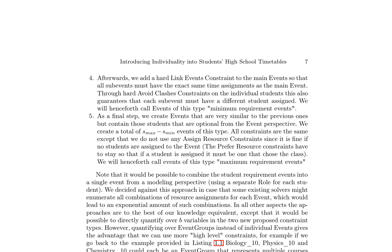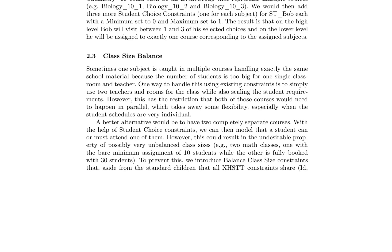The introduction of individuality into students' high school timetables is achieved through a multi-step process. Initially, an event is created for each class with each student assigned as a resource. Student requirement events are generated for each student representing their chosen subjects, linked to main events via hard link events constraints ensuring sub-events have the same time assignments. Hard avoid clashes constraints on individual students guarantee each sub-event has a different student assigned, referred to as minimum requirement events. A second set called maximum requirement events is also created, containing optional students and allowing flexibility while maintaining constraints.